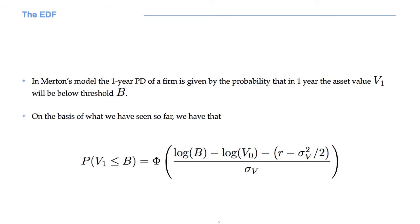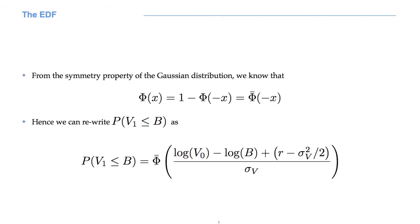In Merton's model, the one year probability of default of a company is given by the probability that, in one year, the asset value V1, because capital T is equal to 1, will be below capital B. On the basis of what we have seen so far, we can write the equation you see on your screen.